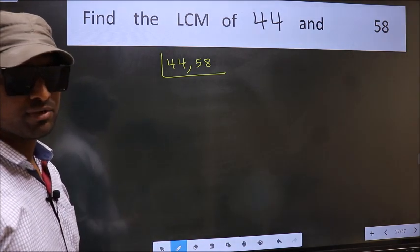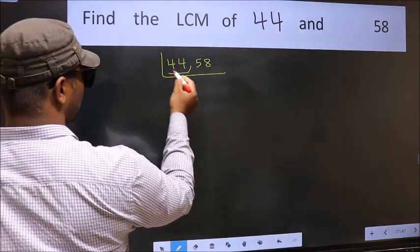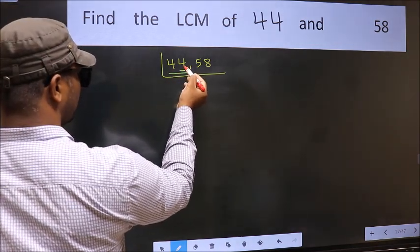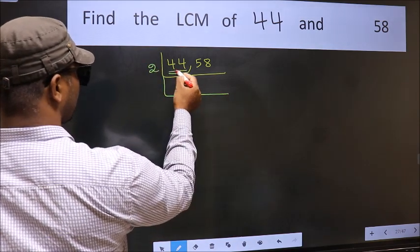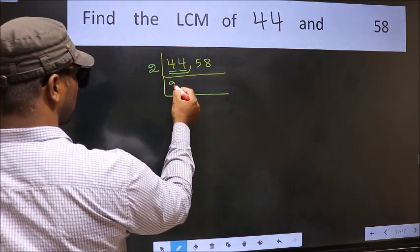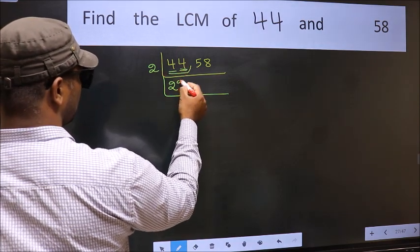Now focus on the first number which is 44. For this number, last digit 4 is even, so take 2. First number 4, when do we get 4 in 2 table? 2 times 2 is 4. The other number 4, when do we get 4 in 2 table? 2 times 2 is 4.